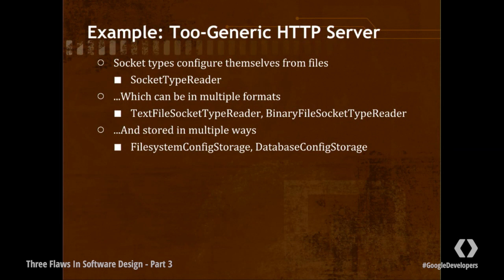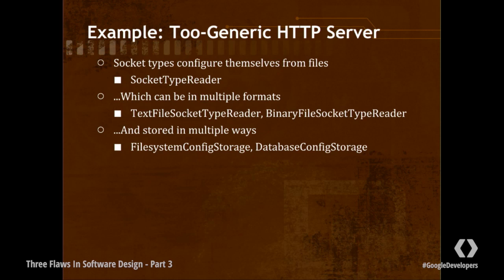Everybody likes configuration files. So instead of writing code to make our HTTP server behave a different way, let's write configuration files — not because we need them, but because we think we might need them in the future. Let's make it so that the sockets can configure themselves, because we want to have different configurations of sockets with different timeouts or something. We need to be able to read socket types from files. And because we like being efficient, in production we want a binary version of this configuration, but binary configurations are hard to debug, so in development we want a text version. And in production we probably want to store this configuration in a database, but in development we might want to store it in the file system.